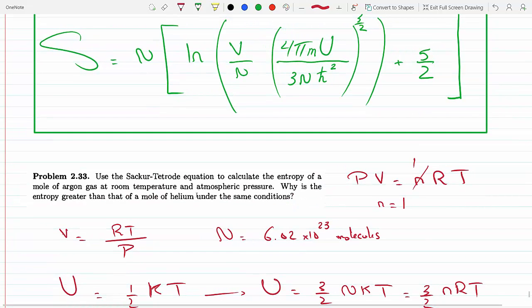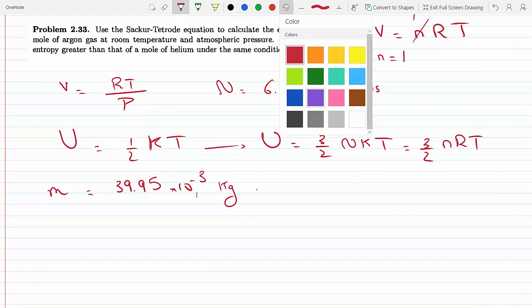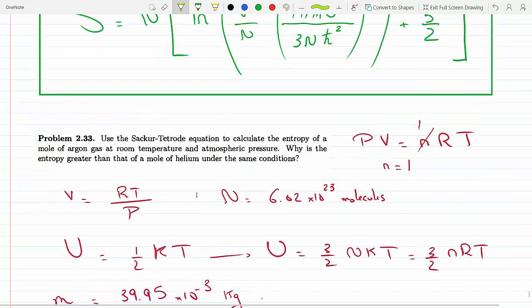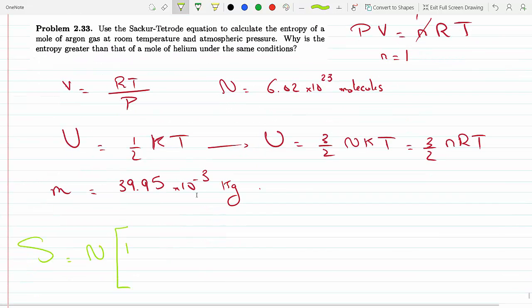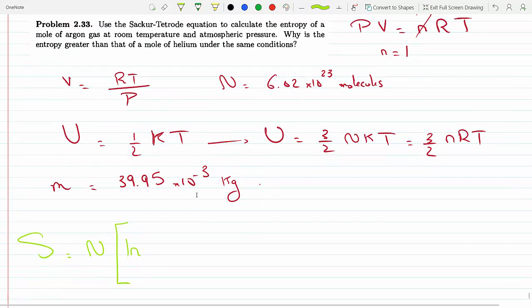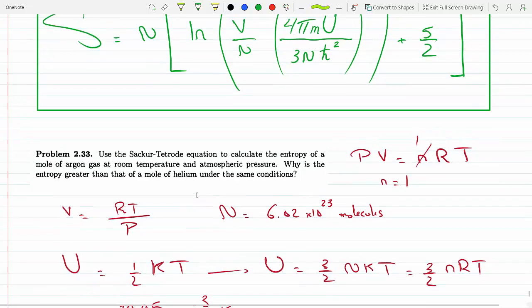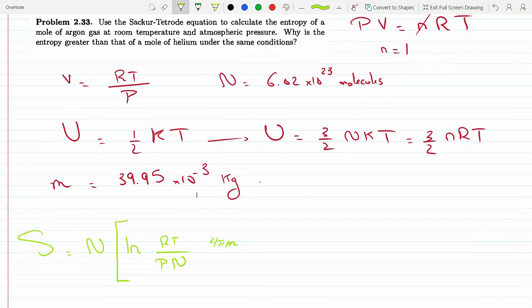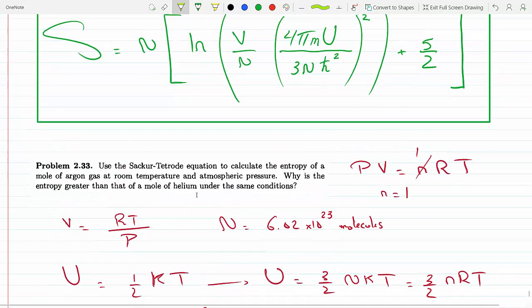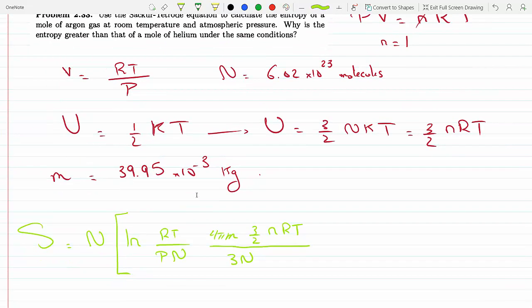Now we are ready to plug all this in. So S becomes, I'm going to put all the values and then I'll plug in the numbers at the end. So ln V over N. V we said is RT over P divided by N, and then we have 4 pi m u. U is 3 over 2 n RT divided by 3 n squared.